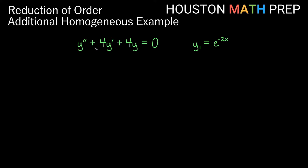Here we've got the equation y double prime plus 4y prime plus 4y equal to 0, and we're given a known solution of e to the negative 2x. So e to the negative 2x satisfies this equation, and we want to find the overall general solution.